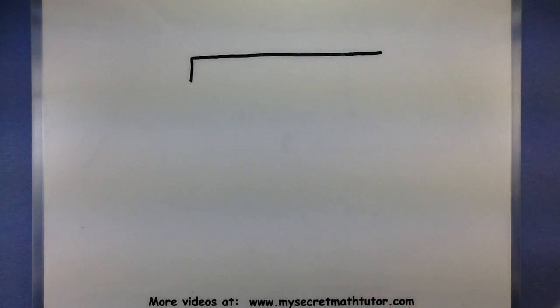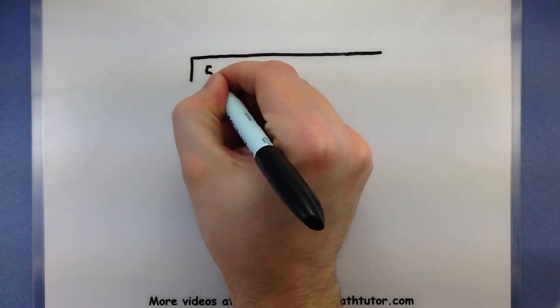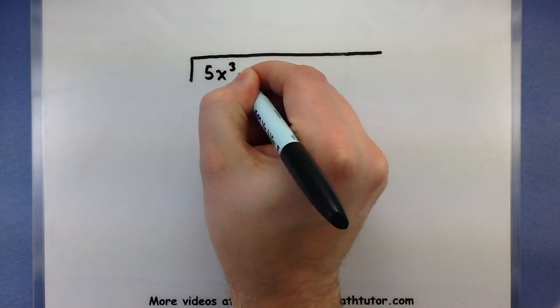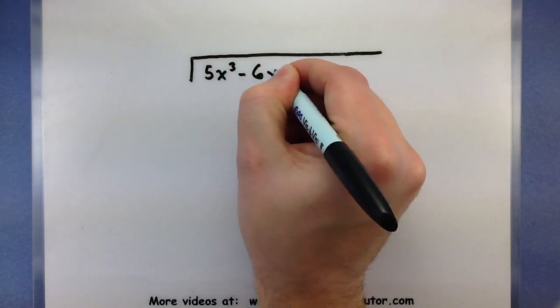The very first thing that you want to do when doing long division with polynomials is make sure you have the correct setup. So in my problem I have the polynomial 5x³ - 6x² - 28x - 2.